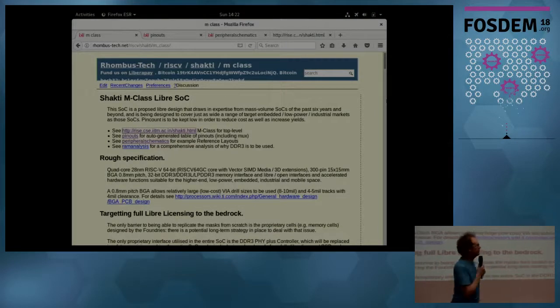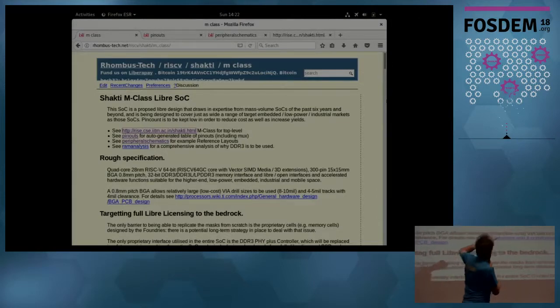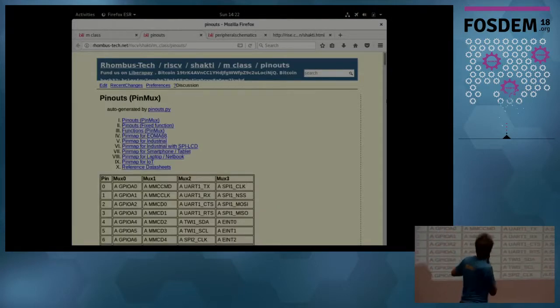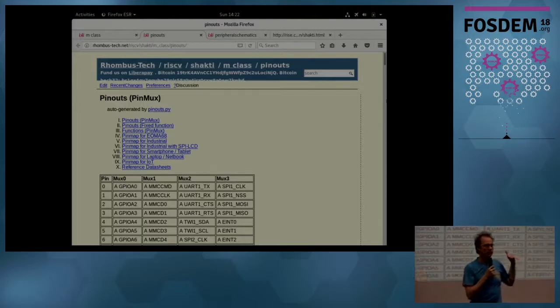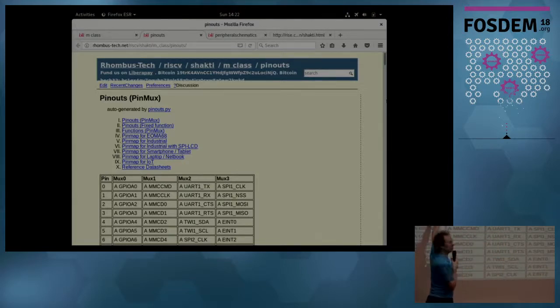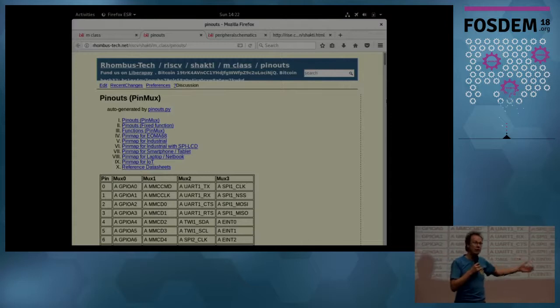So what I did was I talked with him and designed a pinmux for the proposed processor. Now, you can see the URL, rhombus.tech, RISC-V, Shakti, mclass. Can we swap to the pinouts tab? Awesome. Okay. So this is generated by a Python script, pinouts.py. It generates the documentation and the technical reference manual and includes further down some scenarios which test the viability of the whole pinmux design.